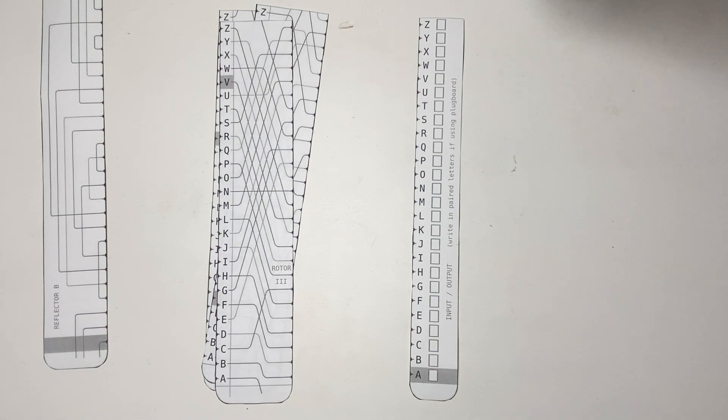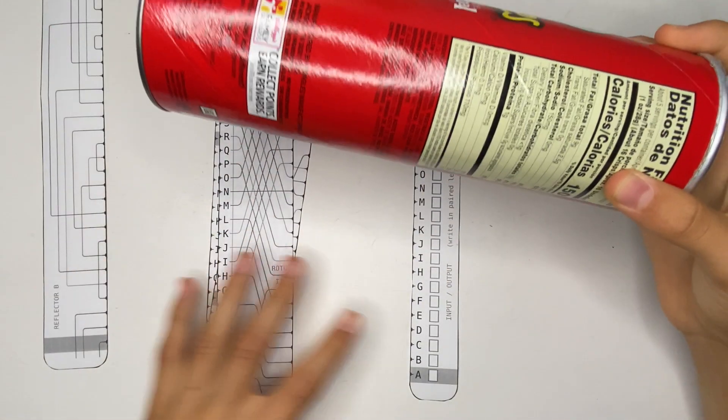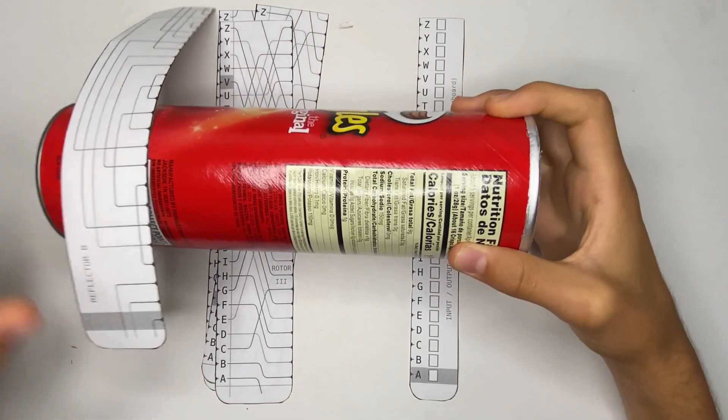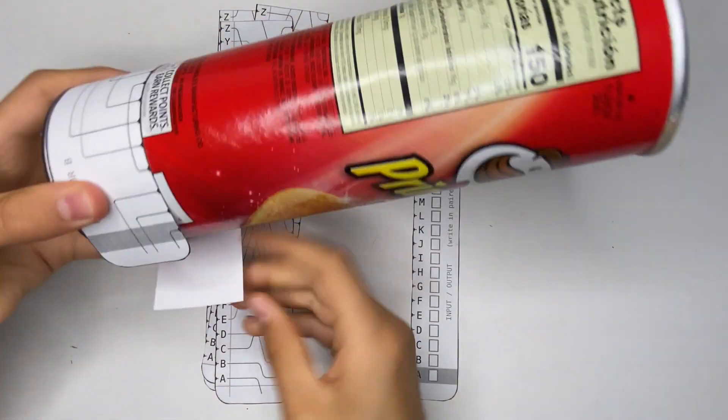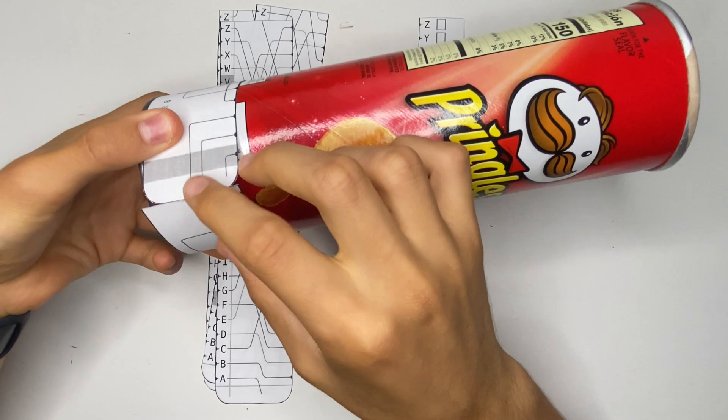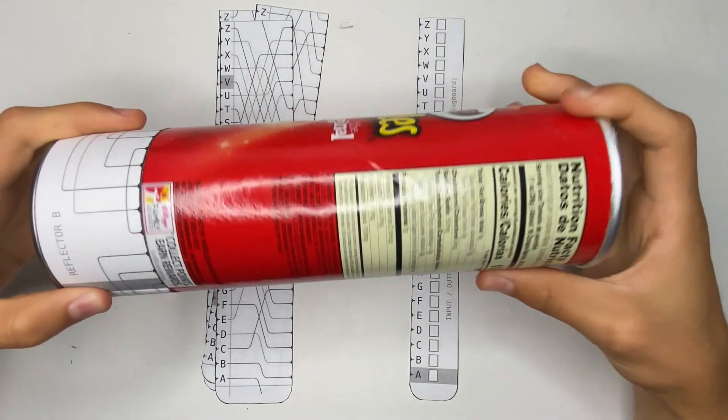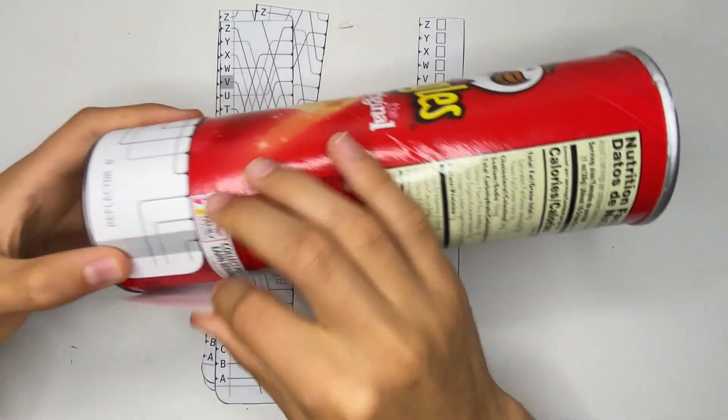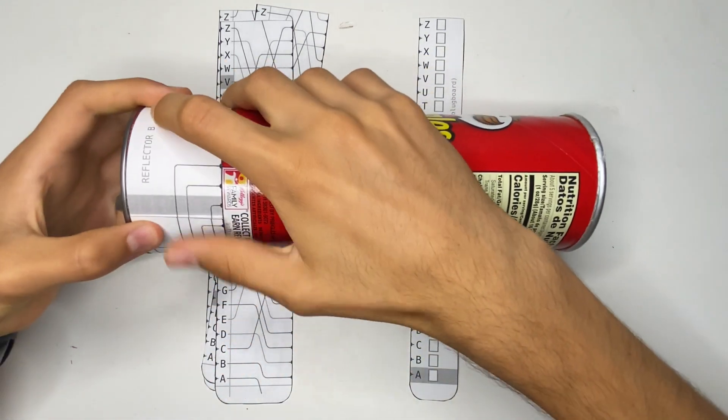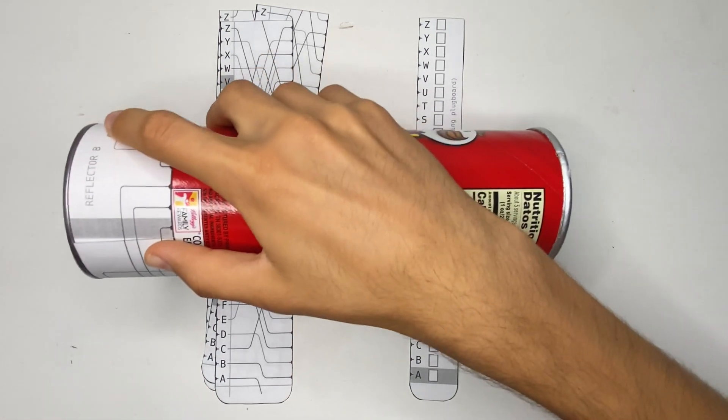So what we're going to do is take the Pringles tube like this and we're going to assemble by wrapping each of these rings around here. So we're going to start with a reflector down at this end and we're going to just tape that down.